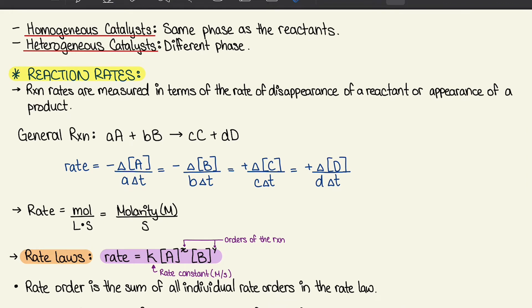There are two types of catalysts: homogeneous, meaning they're in the same phase as the reactants, and heterogeneous catalysts, which are in a different phase.